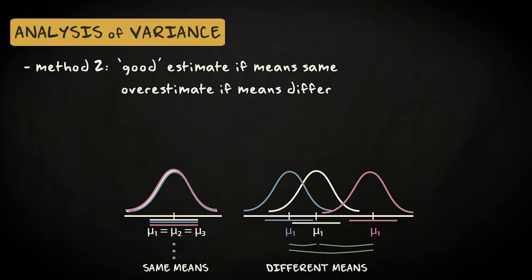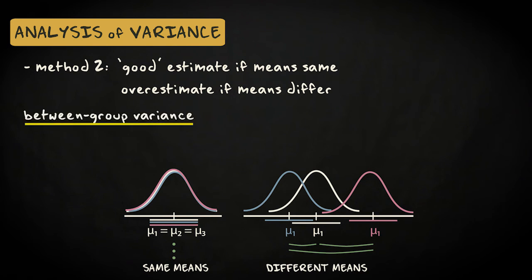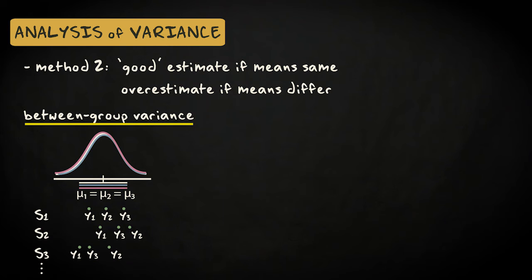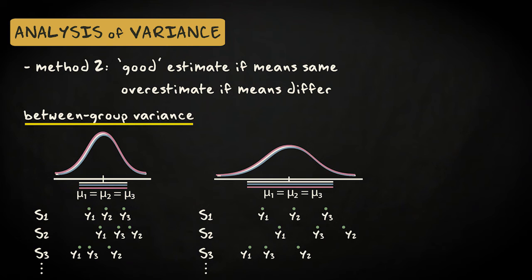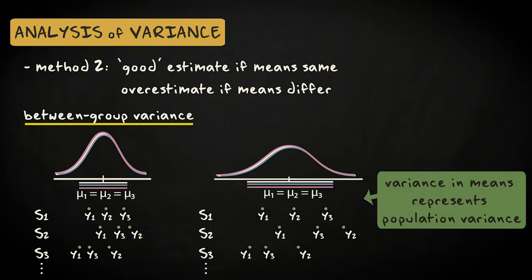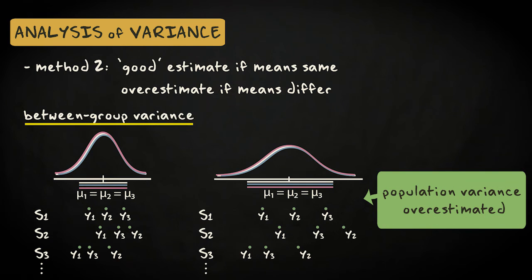The second method, which is not robust when the population means differ, estimates the population variance using the between-group variance — the variance of the means. If the population means are the same, we still expect to find some differences in the sample means. More population variation will generally result in more variation in sample means. So, although it's not a very efficient way of estimating the population variance, the variation in the sample means can be used to estimate it. However, if the population means differ, this will result in additional variation in the sample means, causing an overestimation of the population variance.